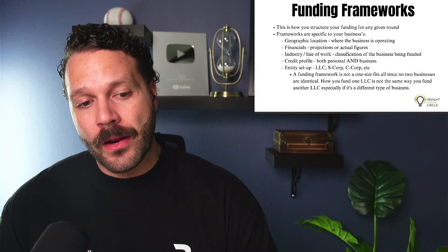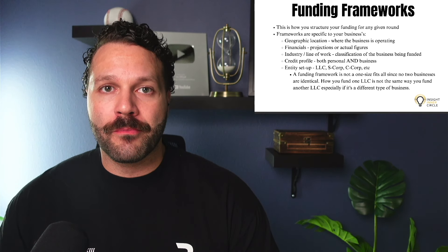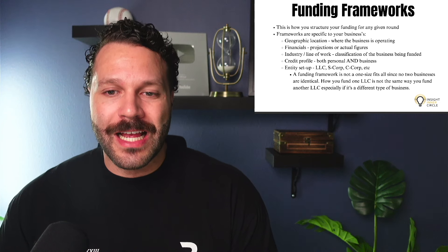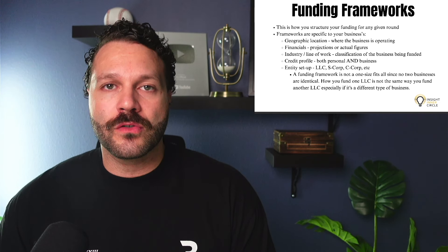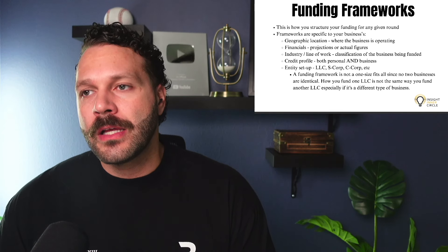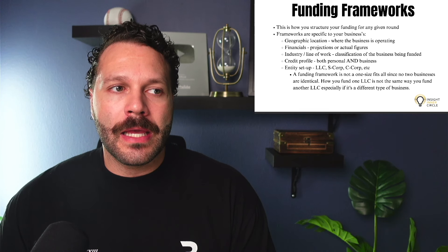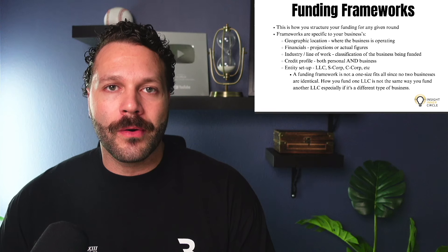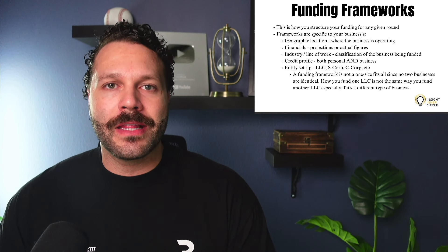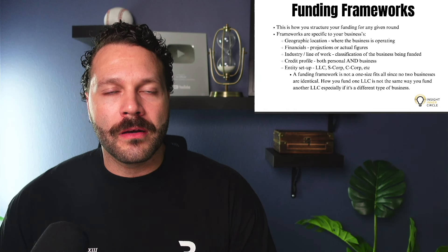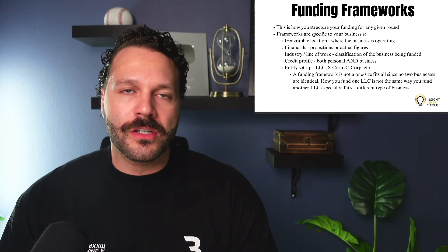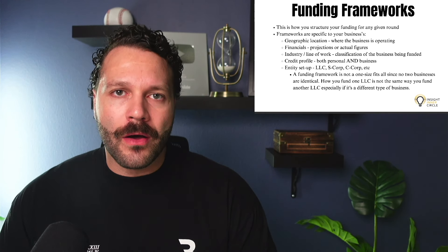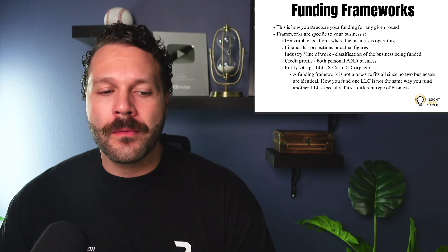You want to go where the money is flowing for your business and industry. Your credit profile — both personal and business — needs to be solid: no thin files, no less than five accounts on the personal side to maximize your funding round. Your entity setup should be an LLC, S-Corp, or C-Corp. Try to stay away from sole proprietorships, because later you'll have to close accounts or switch to an LLC or S-Corp, and in most instances you can't carry that credit with you — you essentially start from zero with a brand new EIN.